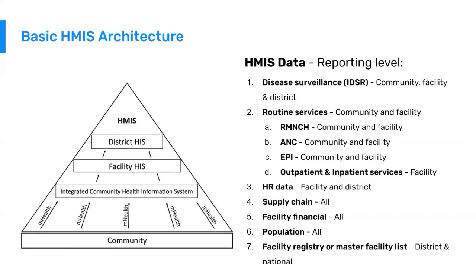Now going to the right side of the screen, we see the kinds of data that are reported at different levels. The HMIS is not limited to this data, but these are very common categorizations of data that the HMIS would capture. For example, disease surveillance is a very prominent role for the HMIS, capturing disease data from community, facility, and district levels. Most health programs also provide a broad suite of routine health services, such as antenatal care, immunization, outpatient and inpatient services, happening at facility level and often at community level as well.